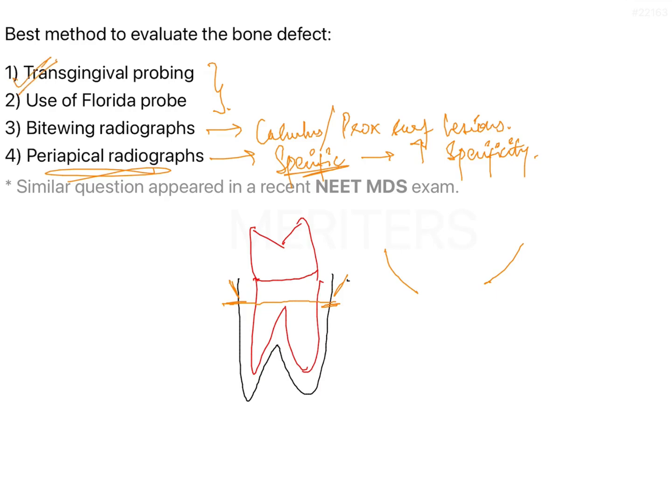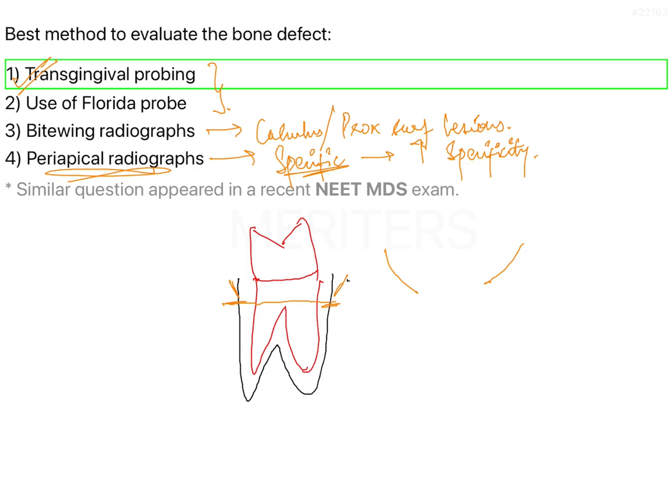In transgingival probing, you anesthetize the entire arch you want to assess. Local anesthesia is required because you are probing all the way down to the bone — literally rupturing the junctional epithelium. Without anesthesia, the patient would be in severe pain. You take a probe, go all the way below the junctional epithelium, and probe until you hit hard bone, then continue to walk circumferentially around the tooth.